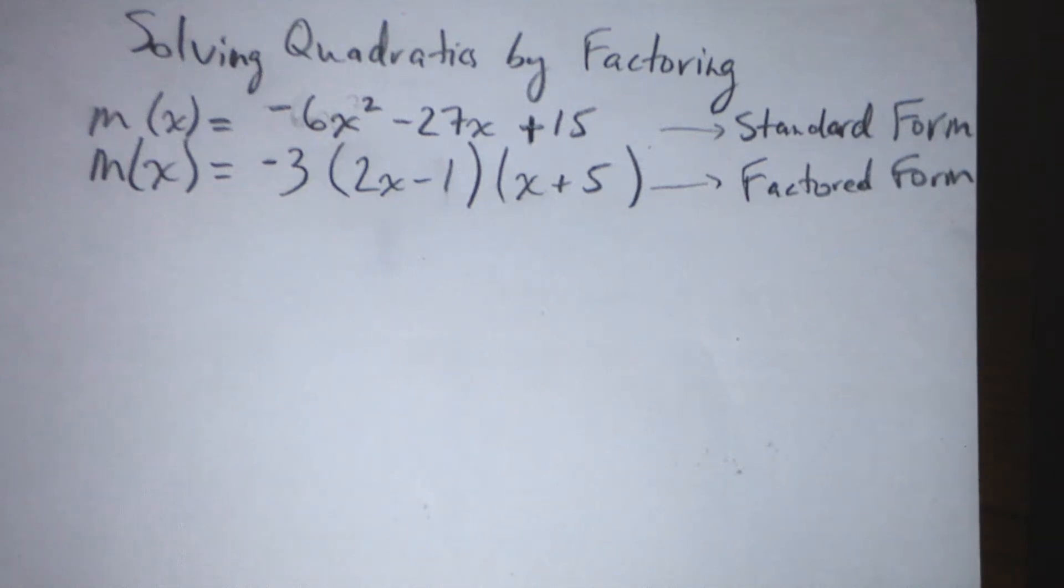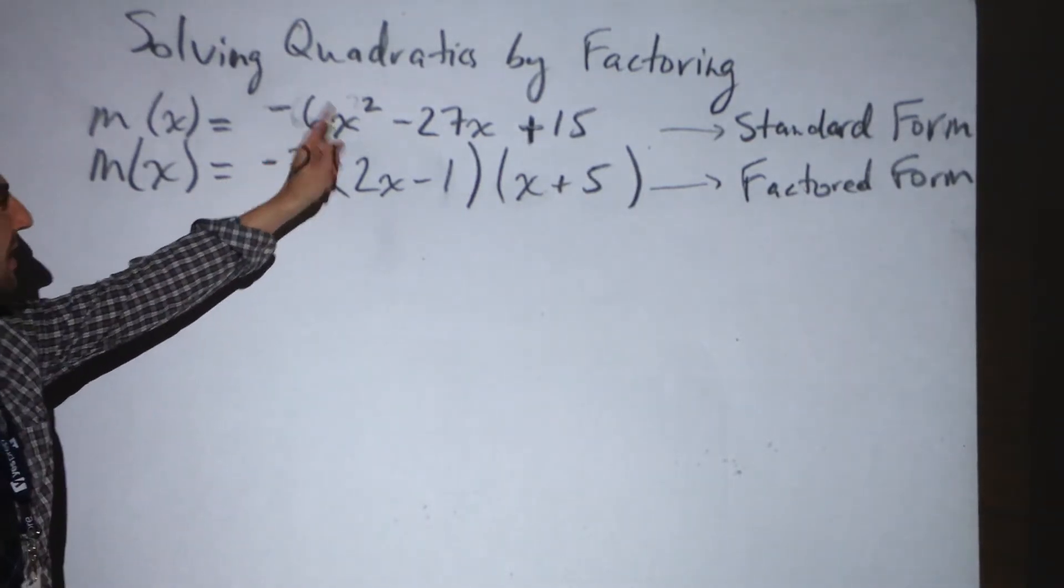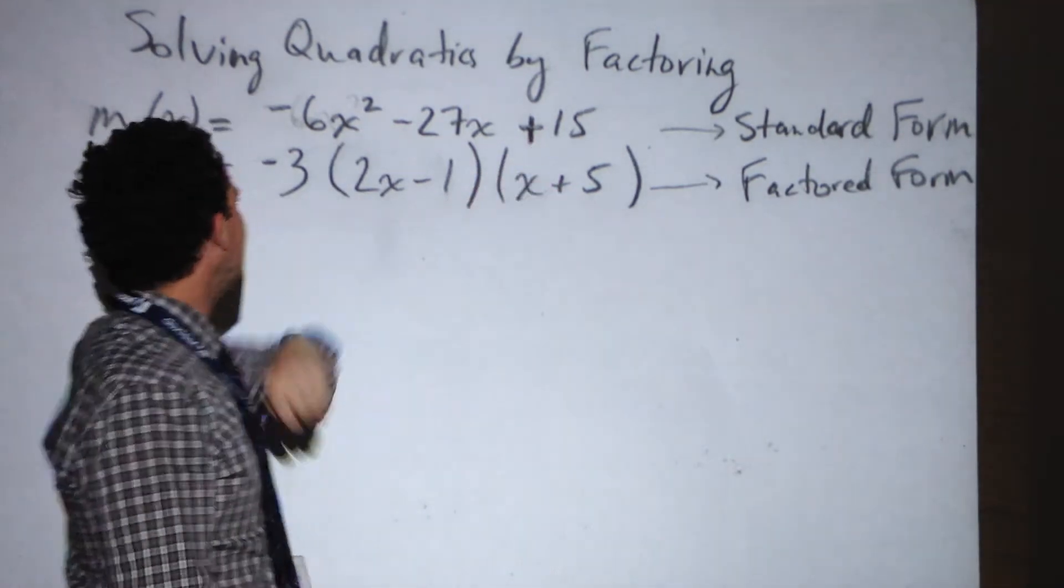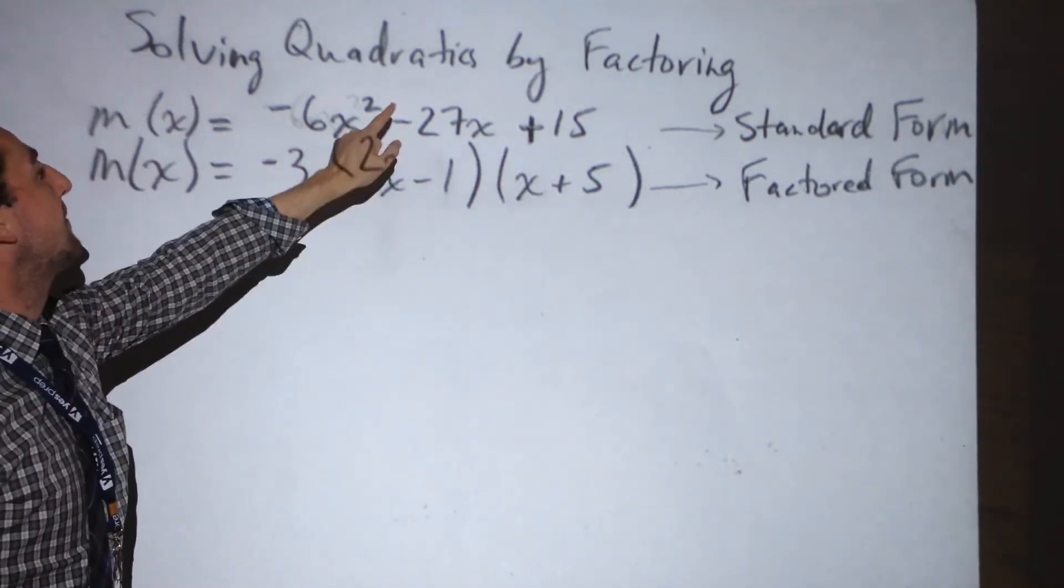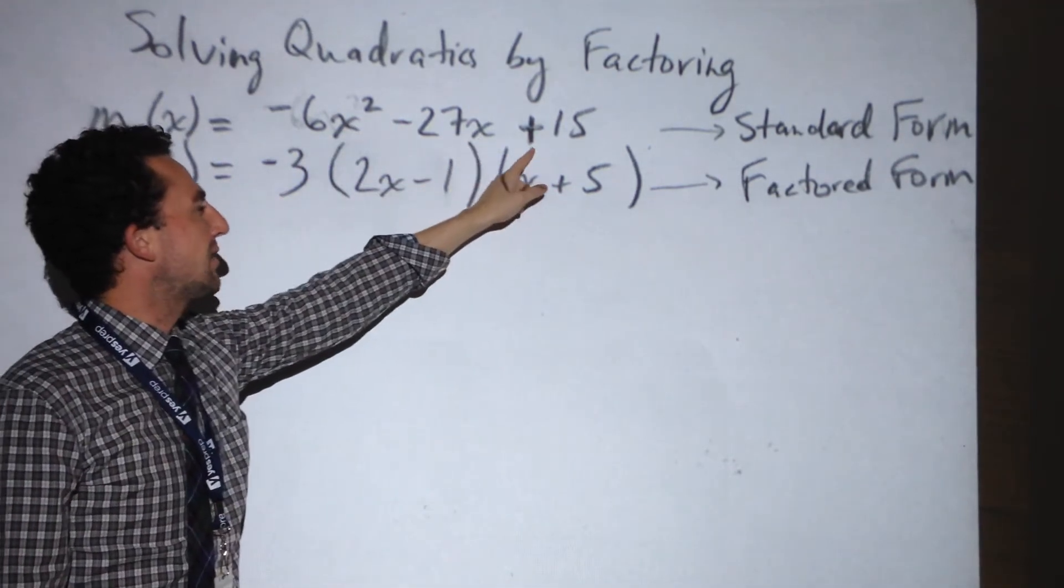Let's suppose that we wanted to solve a quadratic by factoring, meaning solve for its roots, solve for where m of x equals 0 by factoring. So m of x in its standard form, ax squared plus bx plus c, is negative 6x squared minus 27x plus 15.